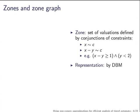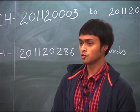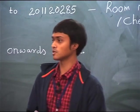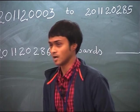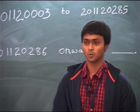A zone is just a set of valuations defined by two kinds of constraints: either a clock compared to a constant, or the difference of two clocks compared to a constant. Because of this nice structure, zones can be represented by difference bound matrices, which have efficient operations on them. Representing and working with zones is a cakewalk.